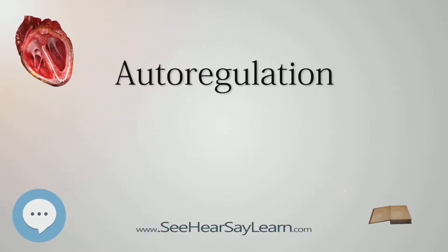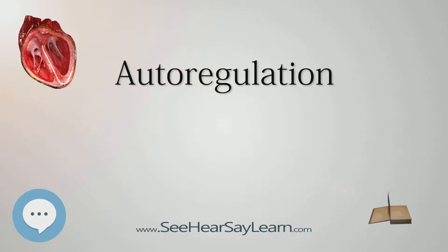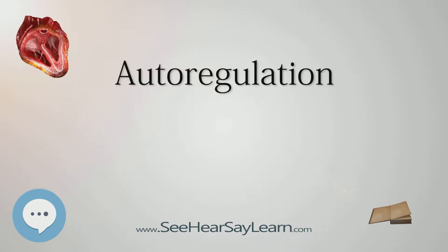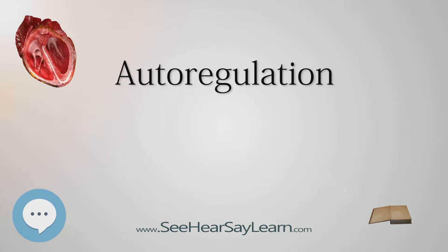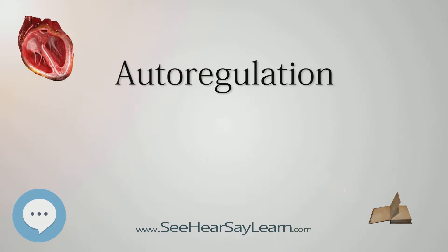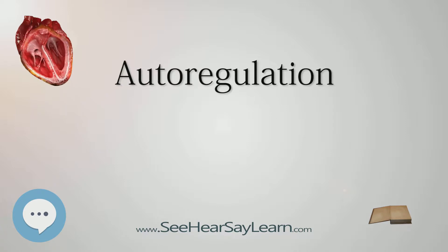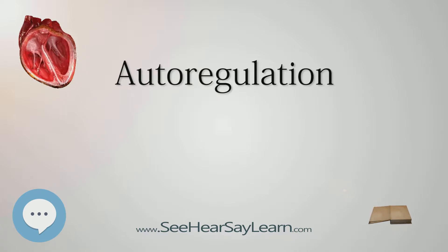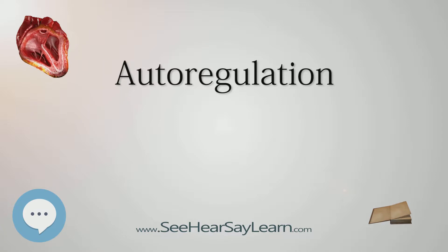Autoregulation is a process within many biological systems, resulting from an internal adaptive mechanism that works to adjust, or mitigate, that system's response to stimuli. While most systems of the body show some degree of autoregulation, it is most clearly observed in the kidney, the heart, and the brain.